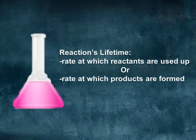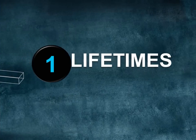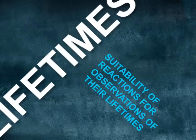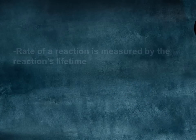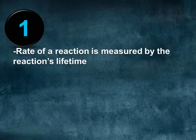The rate of reaction can be measured by the rate at which reactants are used up or the rate at which products are formed. This is known as a reaction's lifetime. The rate of reaction is measured by the reaction's lifetimes, but not all reactions have suitable lifetimes that can be observed.